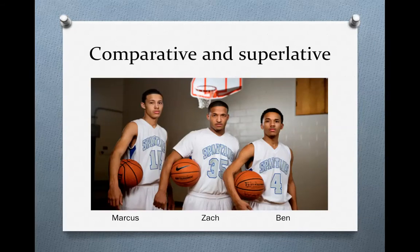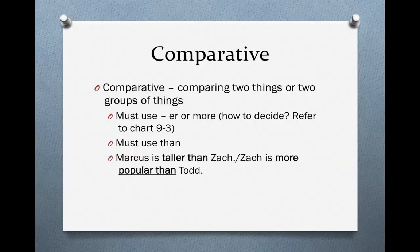Now we're going to talk about comparatives and superlatives. For the following sentences, we'll be talking about three brothers: Marcus, Zach, and Ben. Comparatives are used when you're comparing two things or two groups of things. You must use -er at the end of the word or put 'more' in front of the word. If you're not sure whether to use -er or 'more,' you should look at chart 9-3 in your book — it gives you a good idea of what to do. And you must also use the word 'than.'